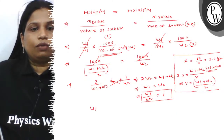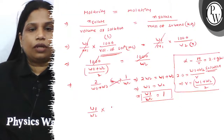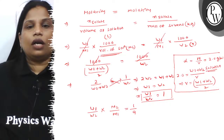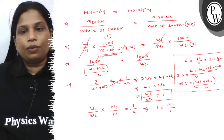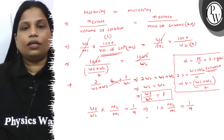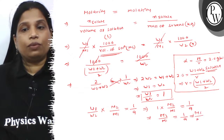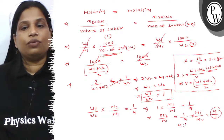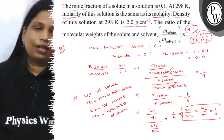Now going back to our equation: W1 by W2 into M2 by M1 equals 1 by 9. Putting in W1 by W2 equals 1, we get M2 by M1 equals 1 by 9. But the question asks for M1 divided by M2, which is solute divided by solvent. So M1 by M2 is 9 divided by 1. The ratio is 9 is to 1. That is the answer — 9 is to 1. Best of luck.